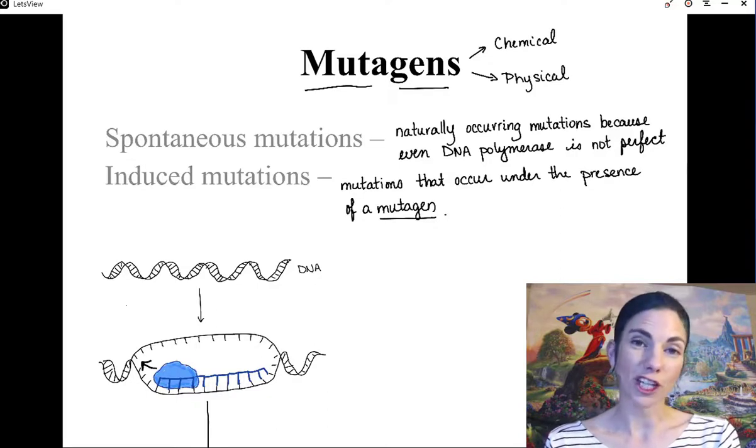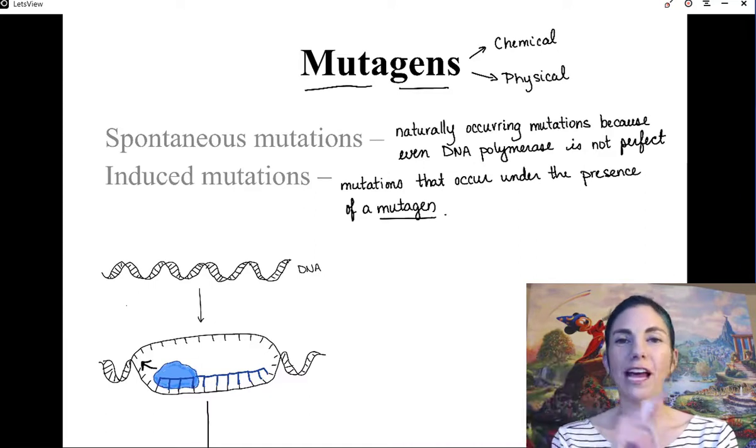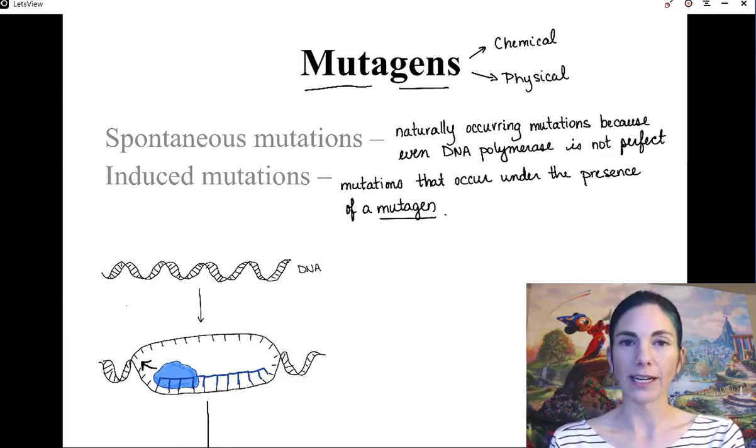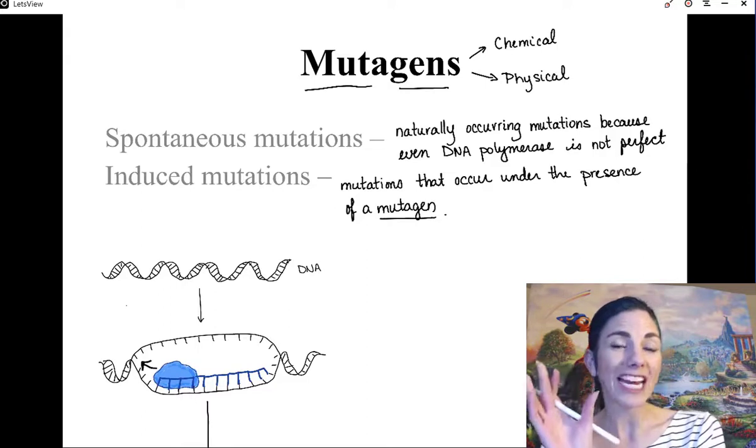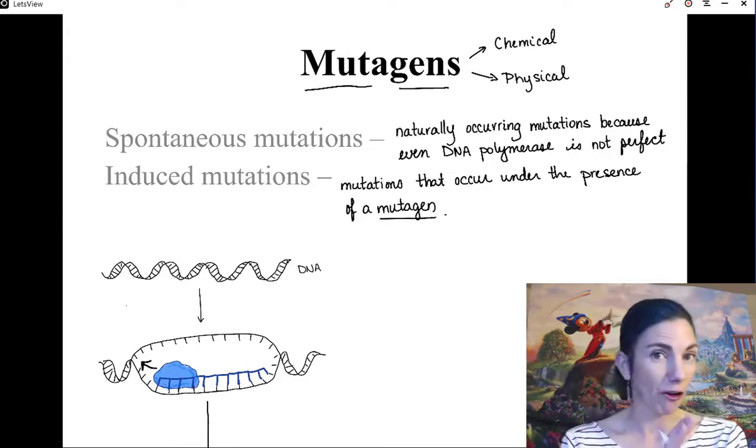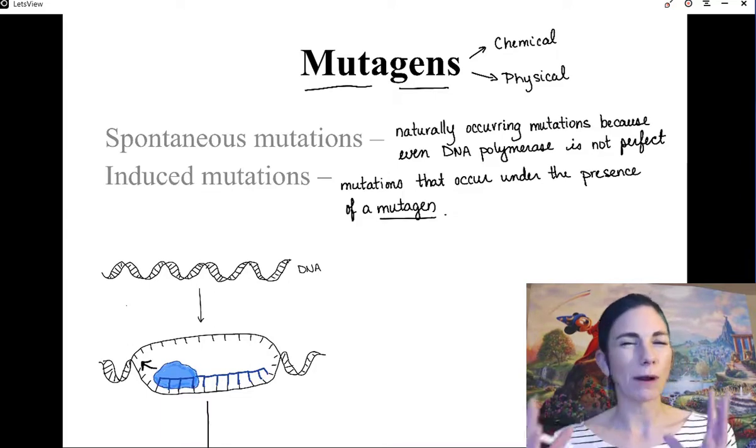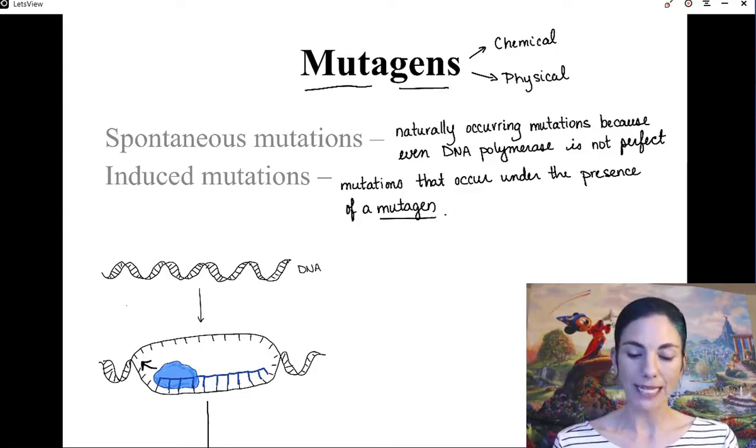Now the definition of a mutagen is one that causes induced mutations. So it's a little bit of a circular definition there. But the term mutagen is really a conjunction of mutation and generate. So mutagen, mutation, generate. In other words, something that generates more mutations than normal. In this first lecture, we're going to be looking at chemicals that increase the mutation rate, and therefore are chemical mutagens. Before we get into some of the chemical mutagens, let's take a look at what we mean by DNA polymerase making a mistake.